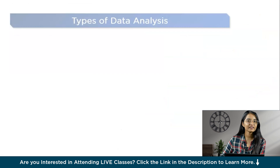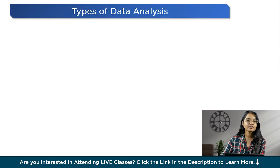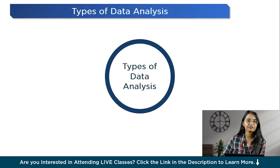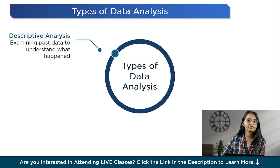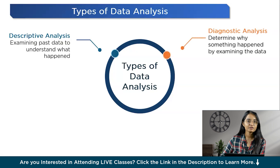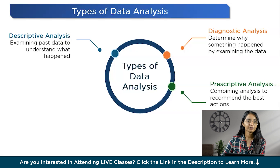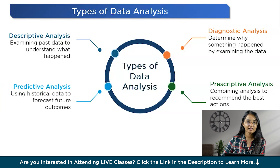There are several types of data analysis, each serving a different purpose. First, we have descriptive analysis, which helps you see what has already happened by looking at past data. Then we have diagnostic analysis, to determine why something happened by examining the data. Predictive analysis uses past data to predict what might happen in the future. And finally, prescriptive analysis combines all of the others to make recommendations for the future.